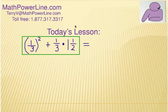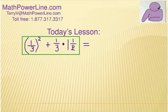So look at what we've got here. This is the fraction one-third and we're going to square it — so there's your exponent. And we're going to add to that the product of one-third times one and a half. So there's your mixed number fraction and there's a regular proper fraction, and we have all that combined in one question.